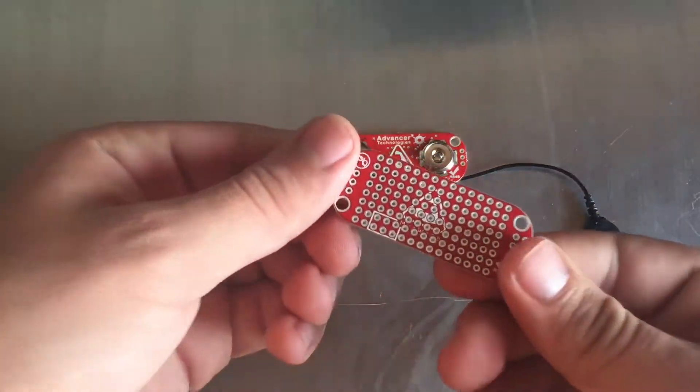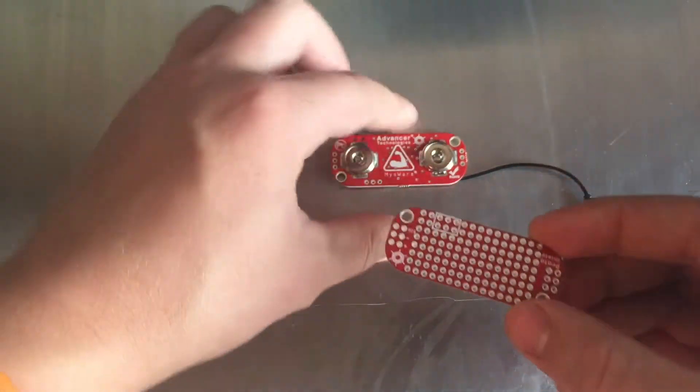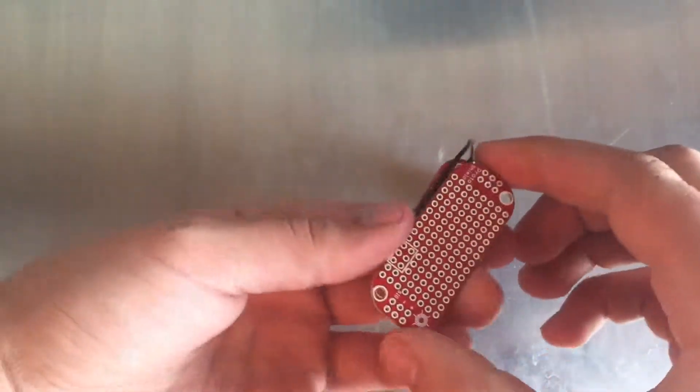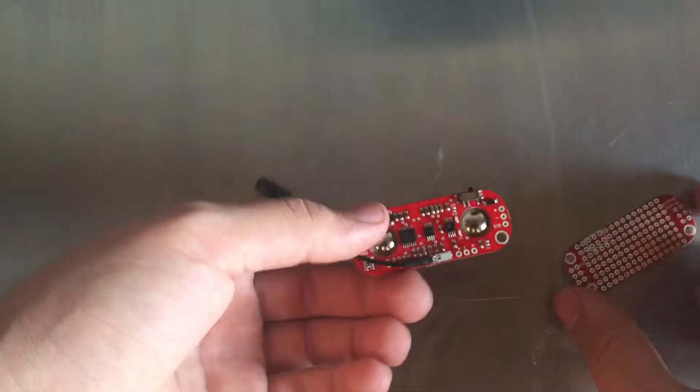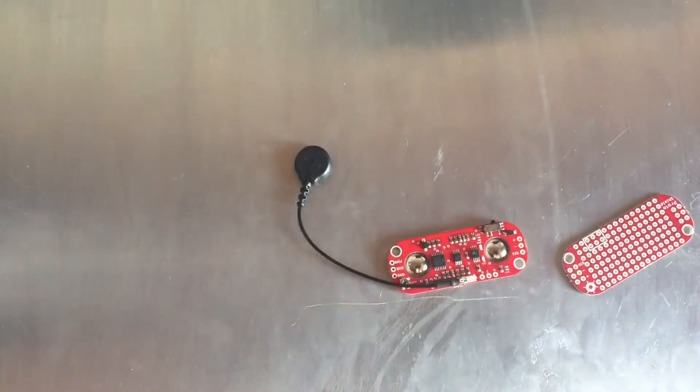This is a prototyping shield that I was talking about earlier. You can solder different electronic components or even cables if you want. And I believe it mounts on top of the Myoware.